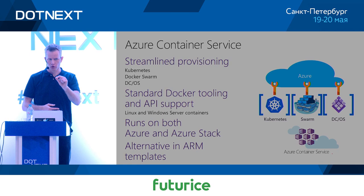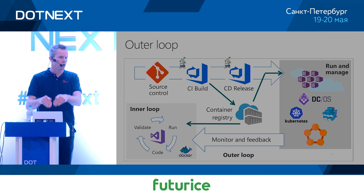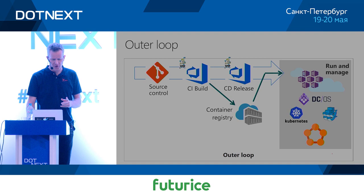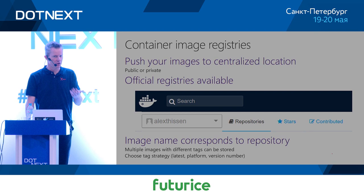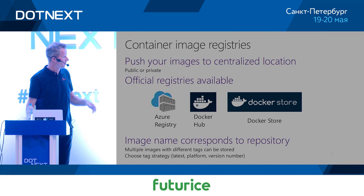We've done the inner loop — running locally, building images on your machine. Now for the outer loop you push to source control and through build pipelines. There are registries available: the official ones from Docker and Microsoft. I use my own Docker registry under my own name — you can use your company name. There's also Azure Container Registry and the Docker Store, Docker Hub's official version, where you sometimes pay to pull images.